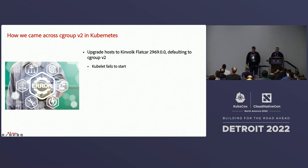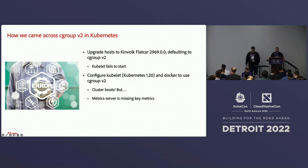That's no good. So we did a little research and found out we actually have to make Kubelet and our container runtime aware that we're running this new version of cgroup. We configured that, our cluster starts — fantastic. But then we found that metric server was missing some key metrics and in some cases wasn't starting. Cgroup is actually responsible for some of the metrics that come out, and we found things like horizontal pod autoscaling wasn't working. Metric server relies on cadvisor, and the version of cadvisor that came with our version of Kubernetes — which at the time was 1.20 — wasn't compatible with cgroupv2.